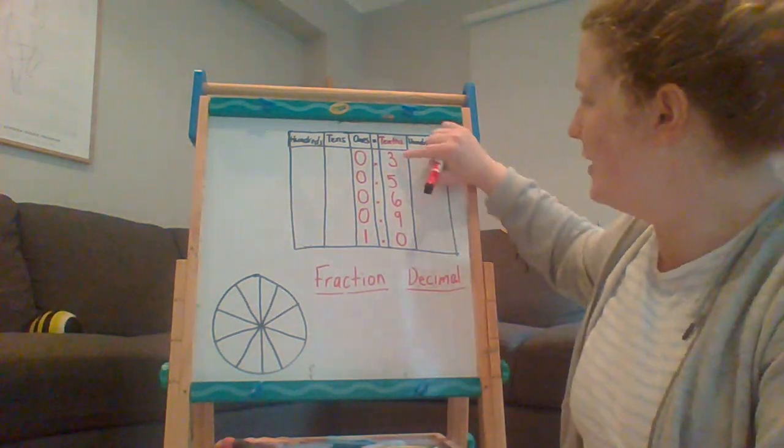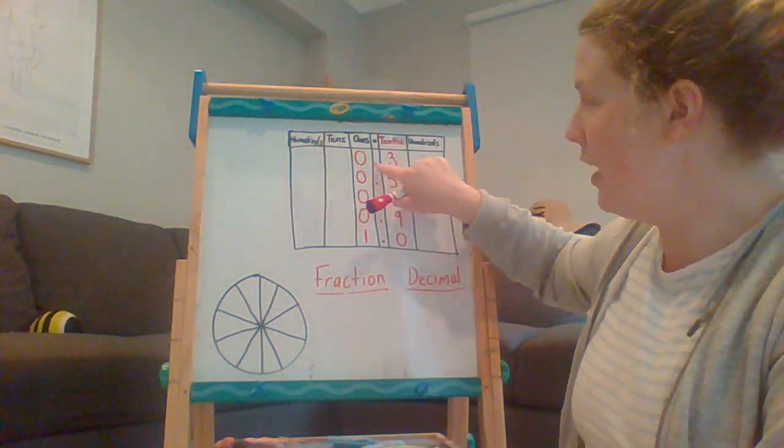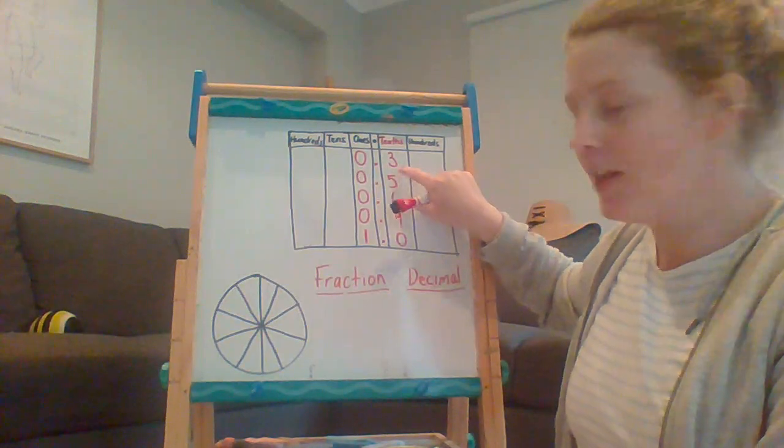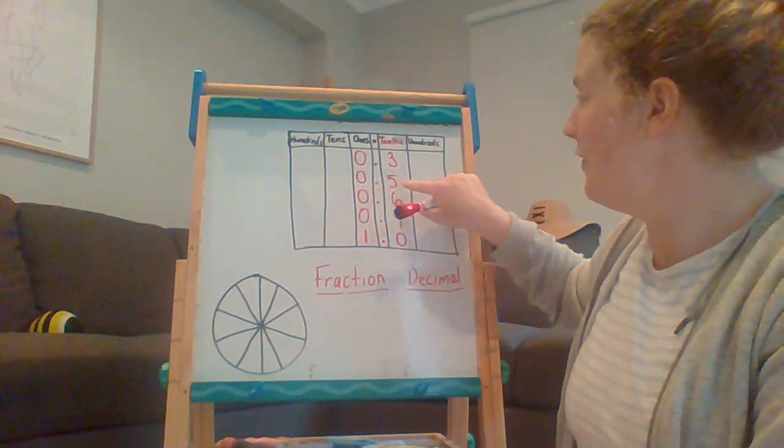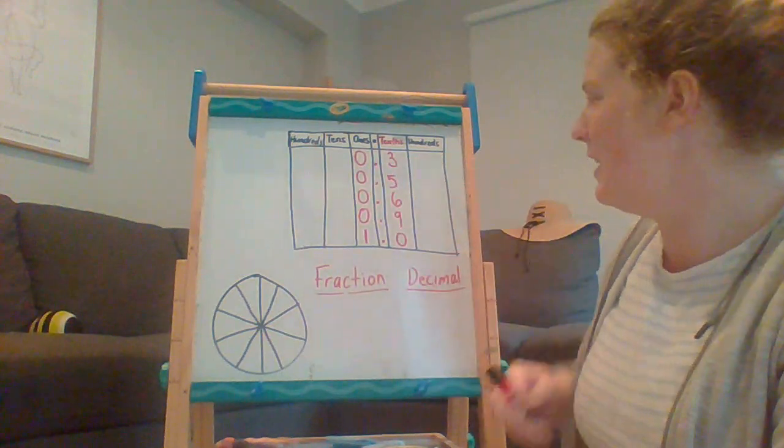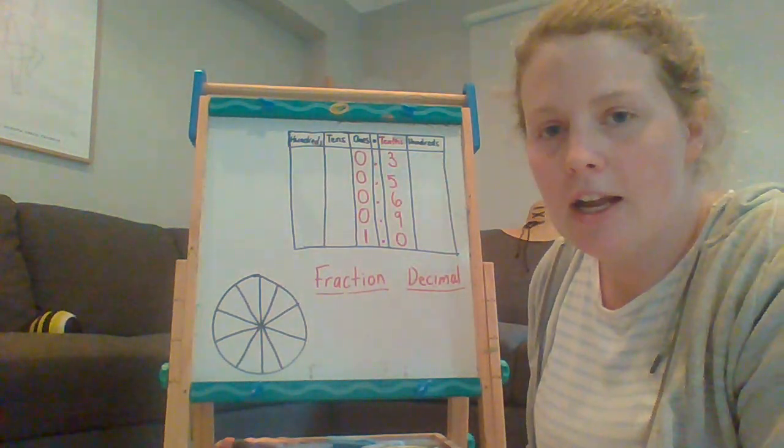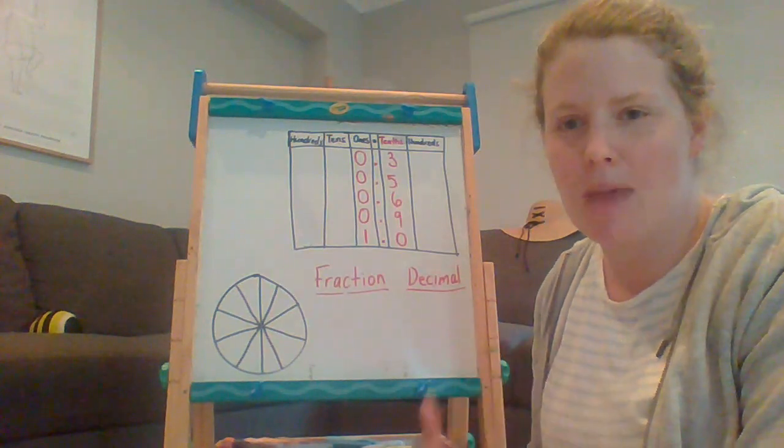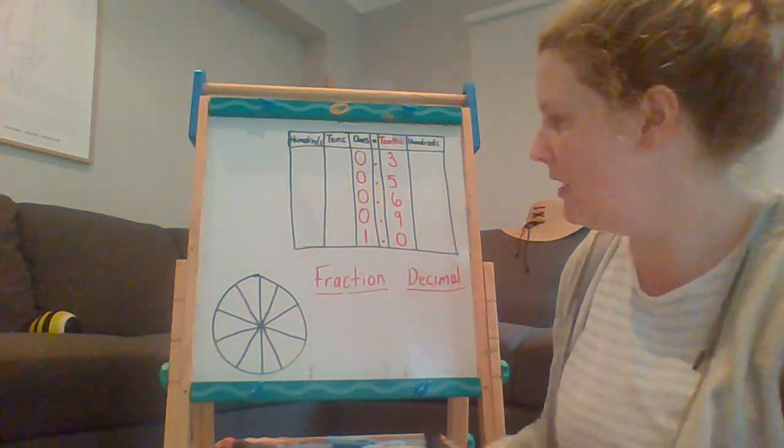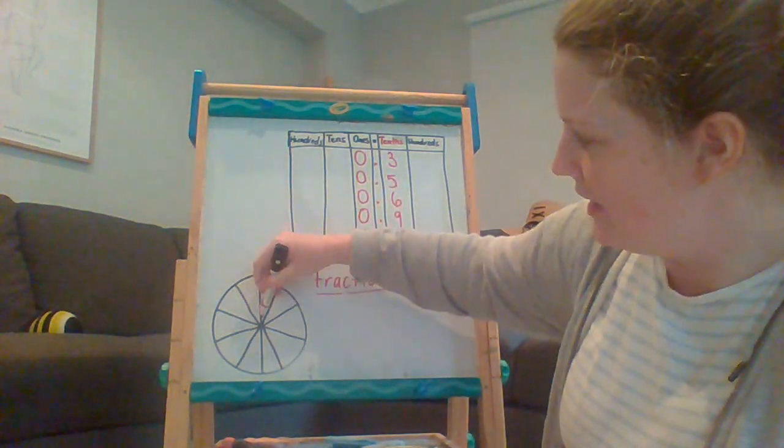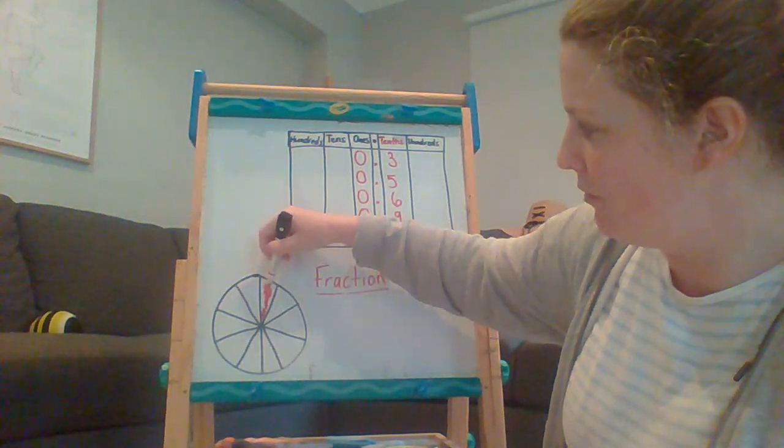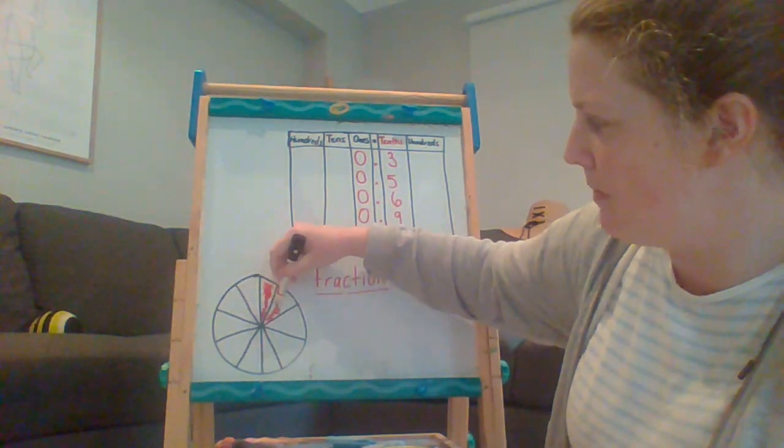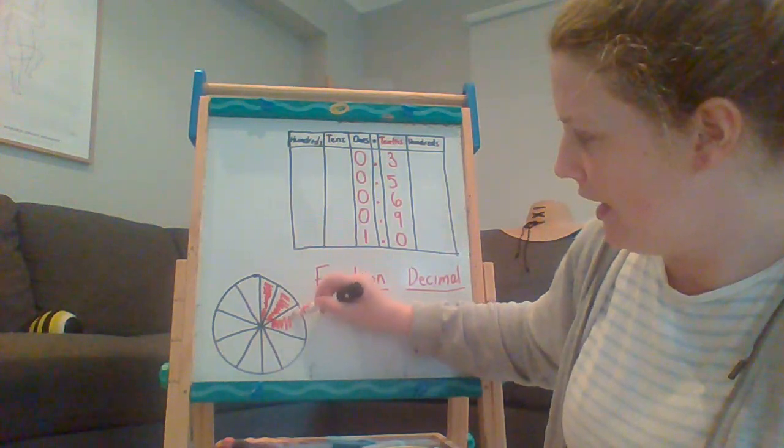Let's look at 0 and 3 tenths and 0 and 5 tenths. Let's look at just those two numbers here. Now, if we're thinking about the size or the amount of those two numbers, if I've only eaten 3 tenths of my pie, so just the three pieces, okay.